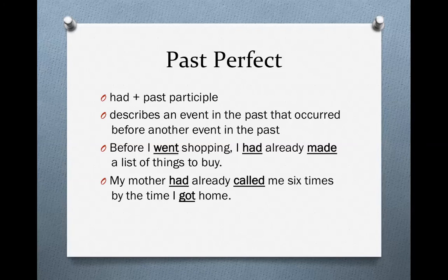Let's look at the sentences. Before I went shopping, I had already made a list of things to buy. We have two events in the past: I went shopping and I made a list of things to buy. Which event happened first? First I made a list of things to buy, then I went shopping. So because making the list was the first event, we use the past perfect — I had made. And because shopping is the second event, we use simple past — I went.